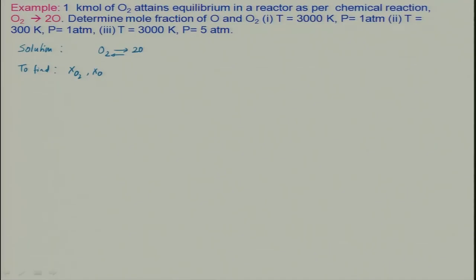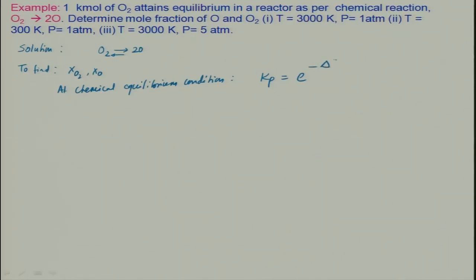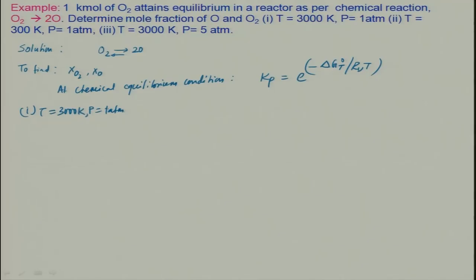We will use Kp. At chemical equilibrium condition, Kp is equal to e^(−ΔG°T / RuT). We will also determine what ΔG° is at temperature T. For Case 1, T is equal to 3000 K and p is equal to 1 atmosphere pressure. T is 3000 K and Ru is the universal gas constant.